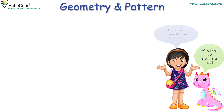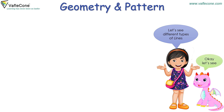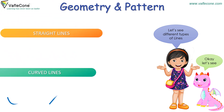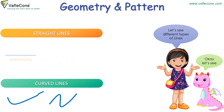Let's see different types of lines. There are two types of lines: straight and curved. Straight lines can be horizontal, vertical, or slanting.